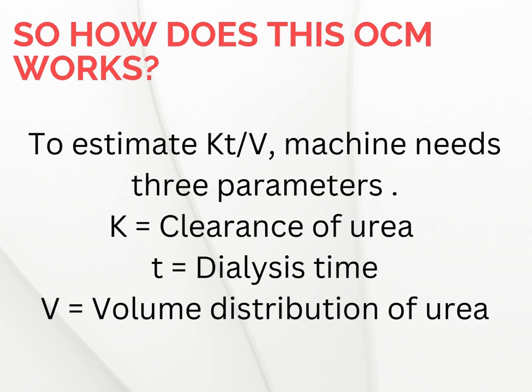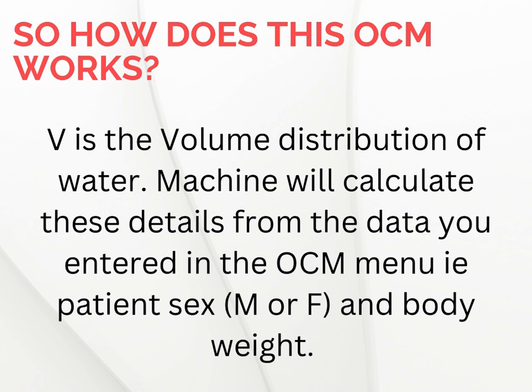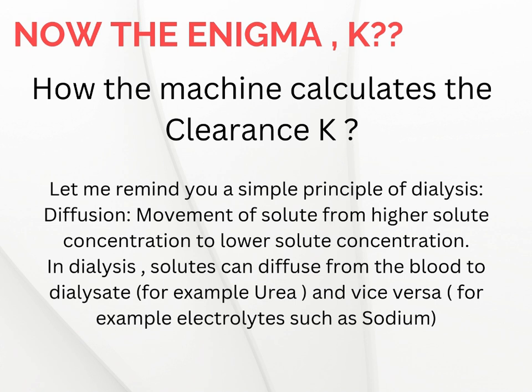So how does OCM work? OCM relies on three factors: clearance K, time T, and volume V. The machine automatically gets T because it's the one running the dialysis. Volume V is calculated from patient details like the patient's gender and weight. But the real enigma is how it calculates clearance K — let's unravel that mystery.